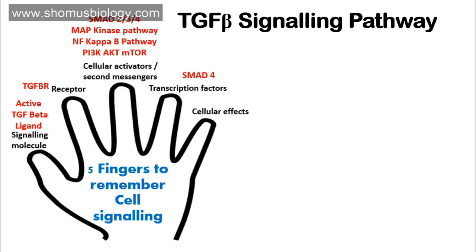The fourth parameter is transcription factors. In this case, SMAD combinations — particularly SMAD 4 along with SMAD 2 and 3 — build dimers and trimers that act as transcription factors, going directly inside the nucleus and targeting the promoters of target genes for transcription. The fifth and most important parameter is the cellular effects: cell growth, proliferation, and providing properties like metastasis and angiogenesis, turning a normal cell into a cancerous cell.